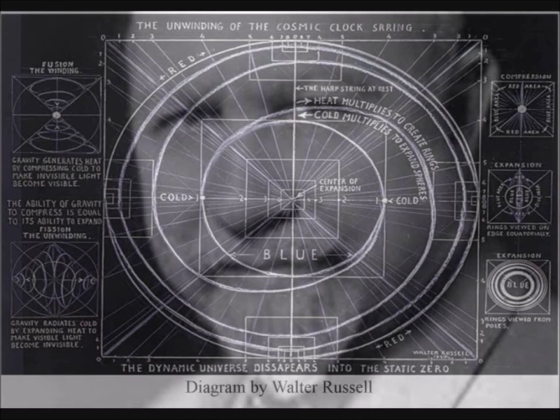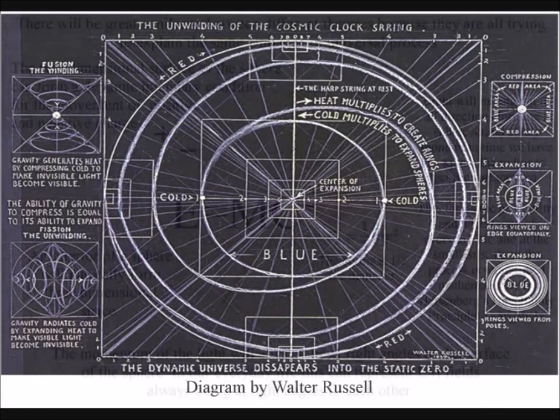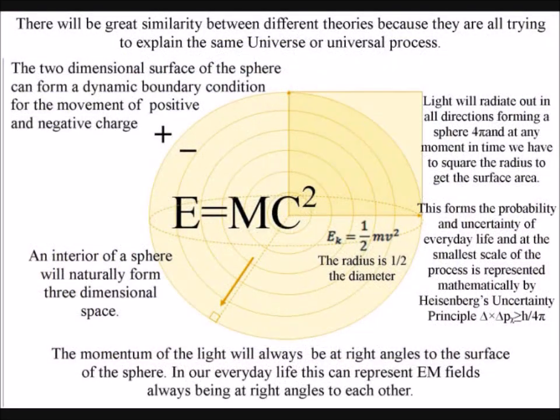Walter Russell believed that everything is light. This can be linked directly with the equation energy equals mass times the speed of light squared. Light will radiate out in all directions forming a sphere and the three dimensions of our everyday life.